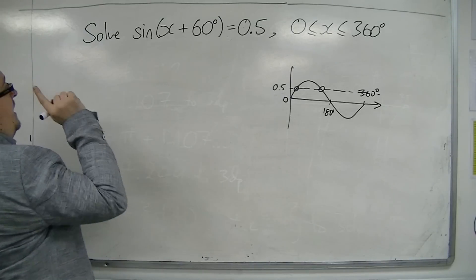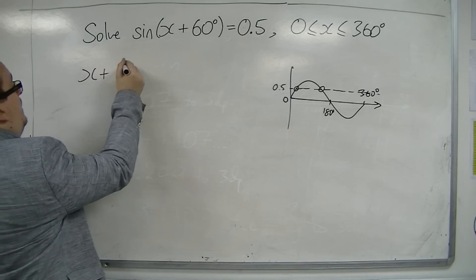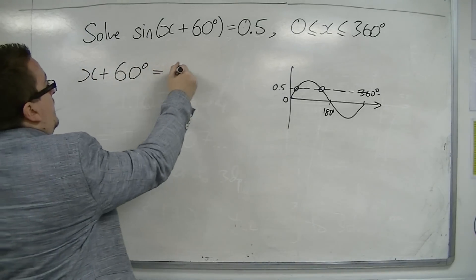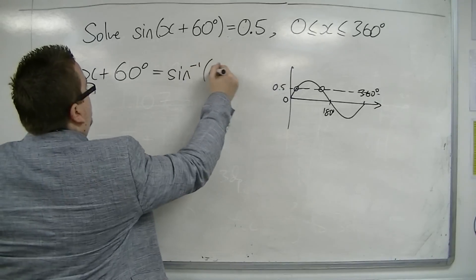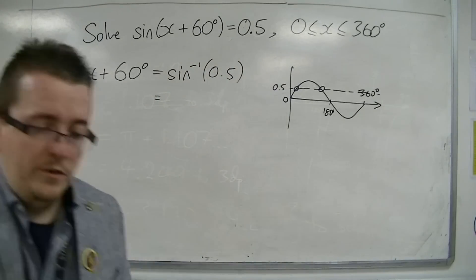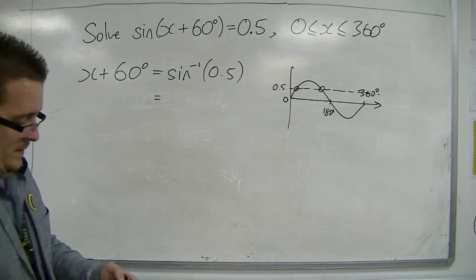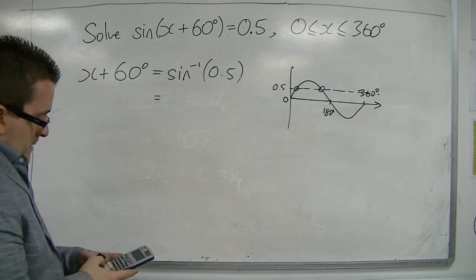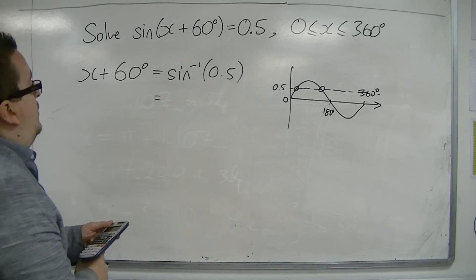So first of all, I'm going to inverse sine both sides and I'm keeping the x plus 60 degrees on the right-hand side. Okay, so I inverse sine 0.5, which is 30 degrees.